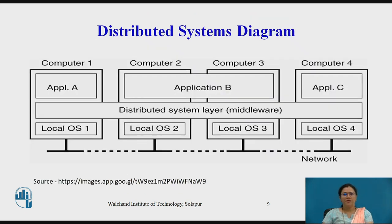We will see the distributed system diagram — a distributed system organized as a middleware. The middleware layer runs on all machines and offers a uniform interface to the system. In this diagram, we have four networked computers and three applications. Application B is distributed across computers 2 and 3. Each application is offered the same interfaces. The distributed system provides means for components of a single distributed application to communicate with each other, and also lets different applications communicate. It also hides the differences in hardware and operating system from each application.